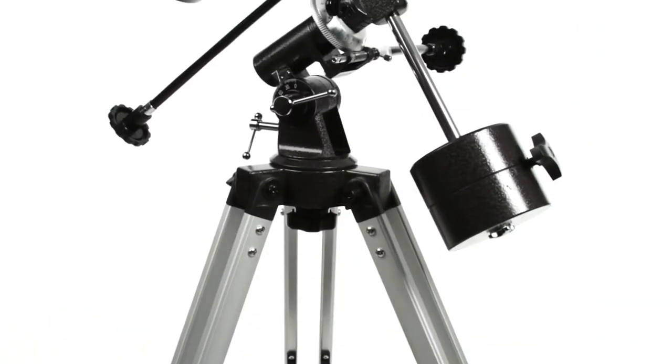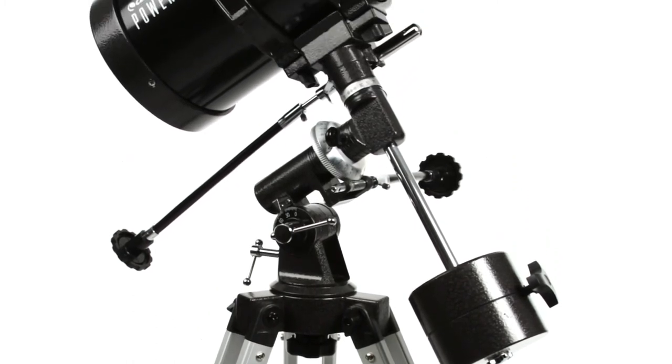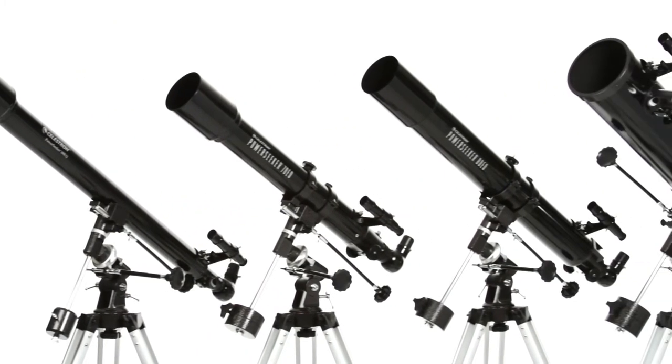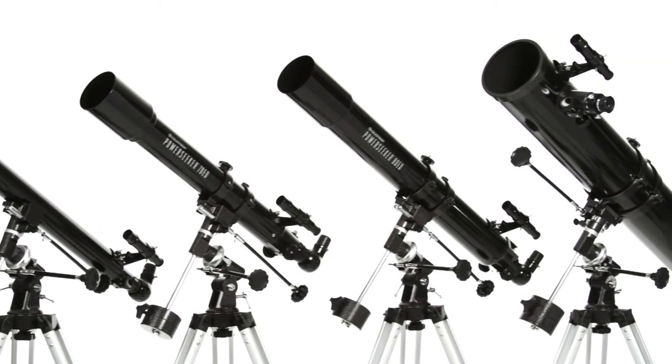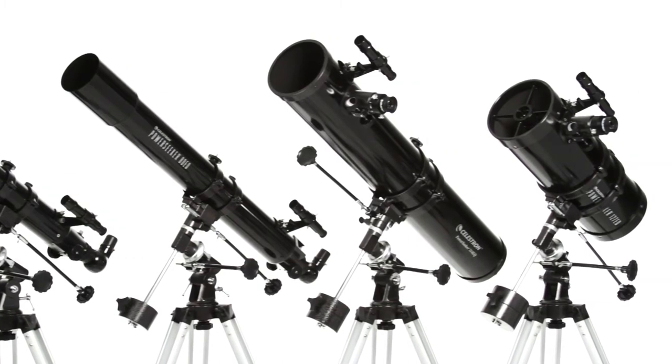The equatorial mount is a favorite of amateur astronomers because it makes it easier to track objects as they appear to move across the night sky. Choose the optical tube that's right for you, from the compact PowerSeeker 60 EQ with grab-and-go convenience, to the large PowerSeeker 127 EQ with more light-gathering ability.